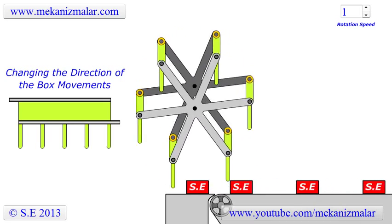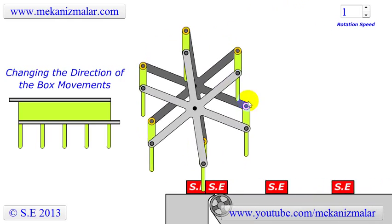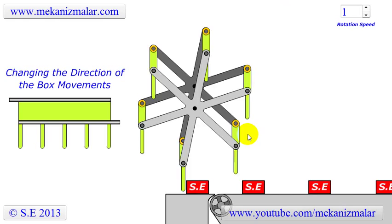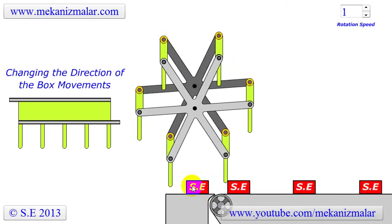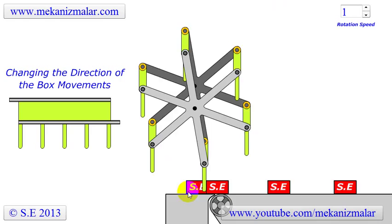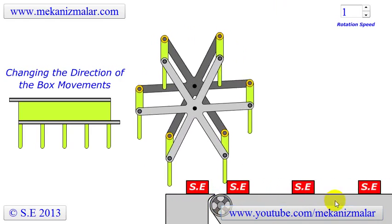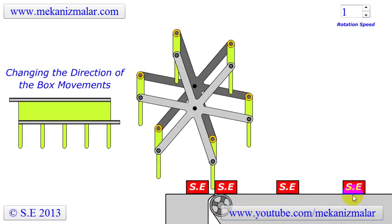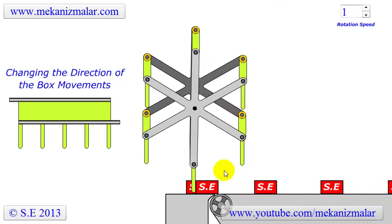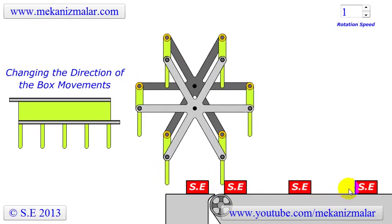Welcome to the video tutorials of Mekonismolar. Here is an animation of a box transfer mechanism. The boxes are constantly fed to the system by an input conveyor system shown here. This mechanism transfers the boxes to another conveyor system which is perpendicular to the input conveyor. The only purpose of this mechanism is to change the direction of the moving boxes.